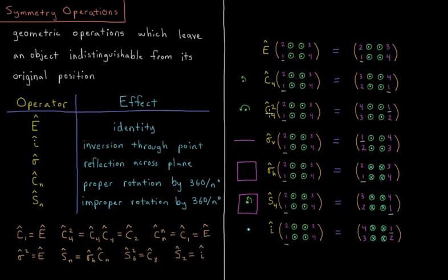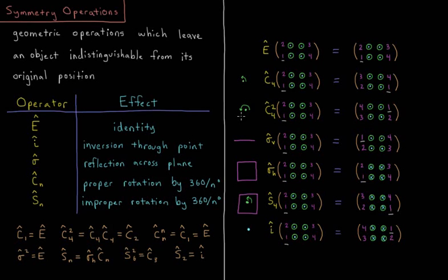If I do c4 squared, which is doing c4 twice, which is c2. So a 90 degree rotation followed by another 90 degree rotation would be a 180 degree rotation or 360 over two for a c2 axis.